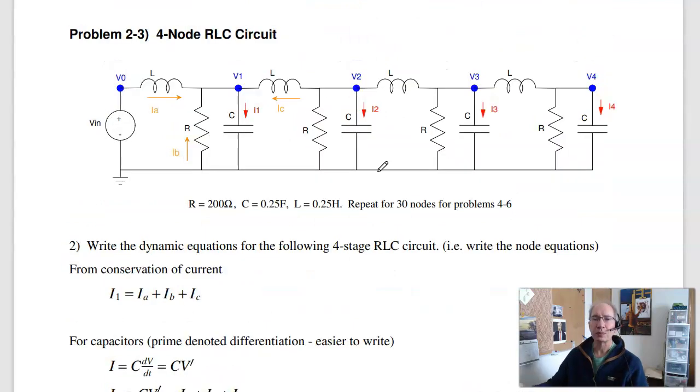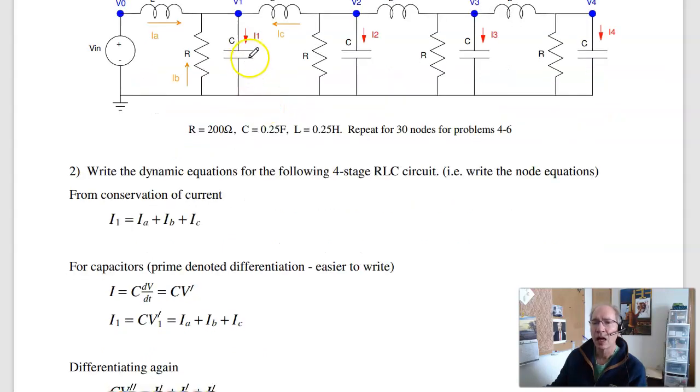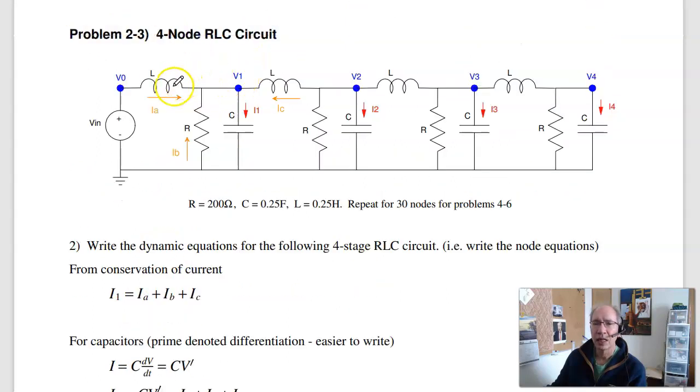Problem two looks at an RLC circuit. This would be like a circuit board trace, or a waveguide, or cars in traffic. They can be modeled as an RLC circuit. The differential equation for this is a little bit tricky. One way to do that is if I take node 1, I know that I1 is Ia plus Ib plus Ic. I know that I1 is C dV/dt.